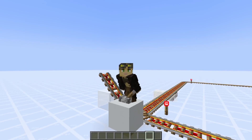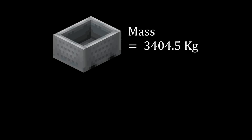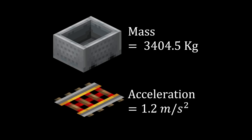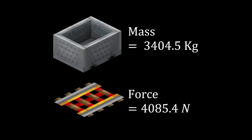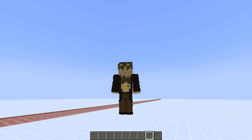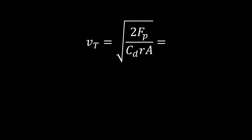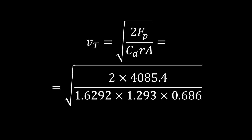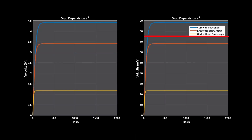It turns out a minecart made of pure iron would have a mass of about 3.4 tonnes. A powered rail accelerates a minecart at 1.2 metres per second squared, meaning powered rails deliver a force of about 4,000 newtons, and can deliver this force continuously every metre, giving them a power output of about 4 kilowatts — comparable to a small motor in the torque range of a Lightning GT. Even more surprising: when we calculate the terminal velocity by combining the force delivered by powered rails with our simulated drag coefficient, the maximum speed a powered rail could realistically accelerate a minecart is about 75 metres per second, or 270 kilometres per hour — right in the ballpark for the speed cap defined by realistic aerodynamics.